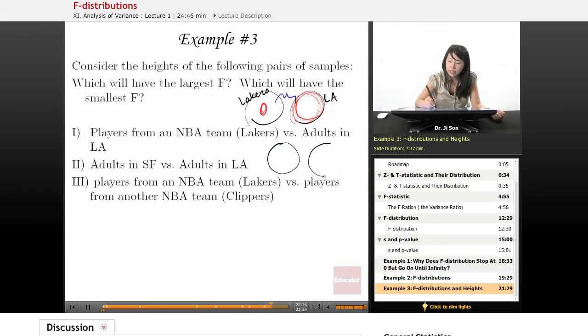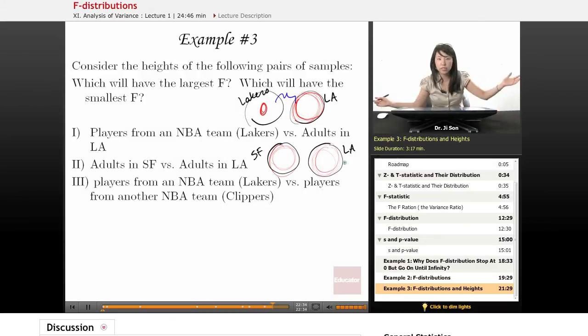Well what about adults in San Francisco versus adults in LA? Well these two probably both have a lot of within sample variation. There's lots of adults in San Francisco, lots of adults in LA, they're all different from each other.